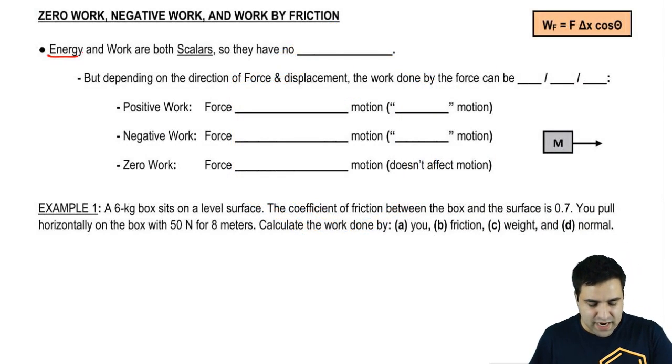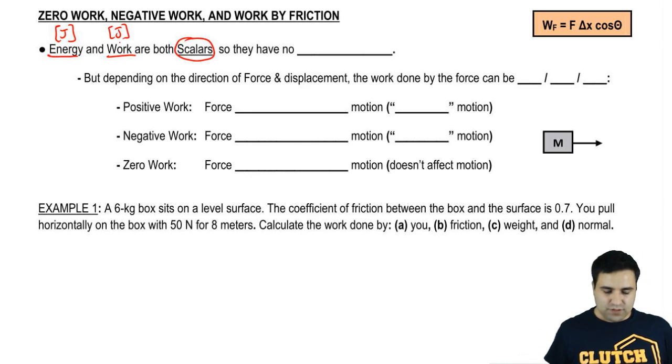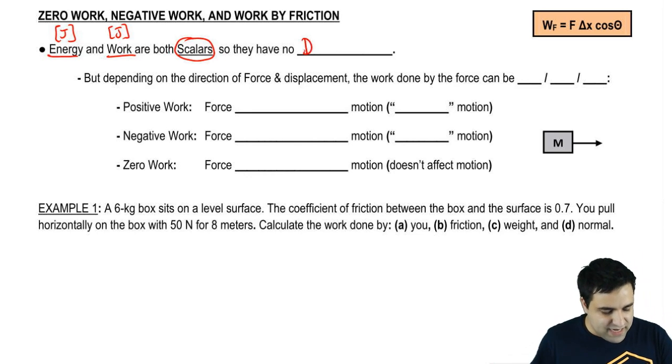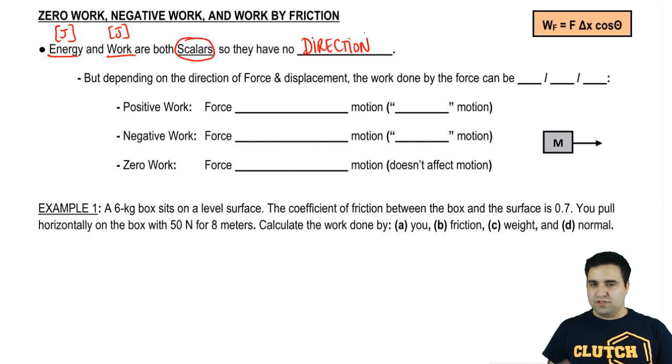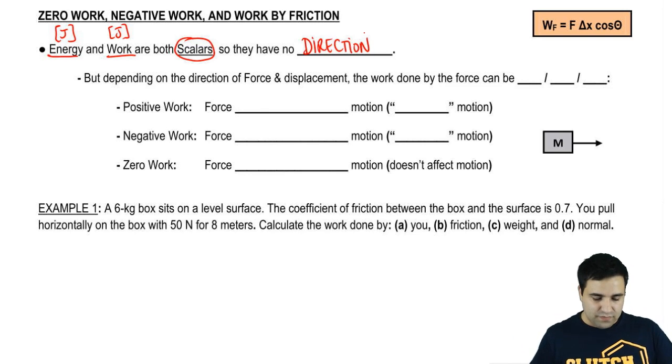First of all, work and energy are both scalars. Work and energy are generally the same thing, basically the same thing. They're both measured in joules, and work is just energy being transferred. They're both scalars, which means they have no direction. If you have 100 joules of work, that's not pointing in any direction, you just have it. But even though they have no direction, they could be positive or negative.